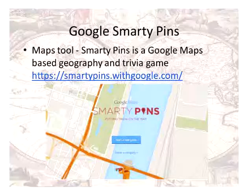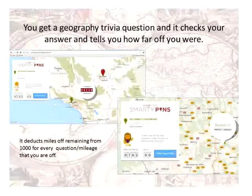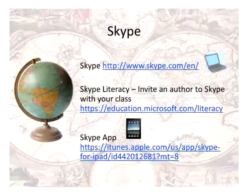I always look for activities for students who finish ahead of time. This is a really cool one called Smarty Pins — a geography and trivia-based game. When you go to Smarty Pins, it gives you 1,000 miles and starts asking geographic questions. It deducts miles from the 1,000 for every mile you are off in your response. So if it asks for Pittsburgh, Pennsylvania, and you choose Harrisburg, Pennsylvania, it calculates how many miles off you are and deducts that. You get to continue playing as long as you have miles left. It's a great geography trivia game from Google.